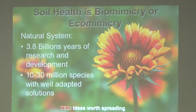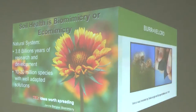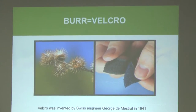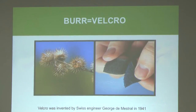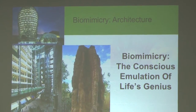If I had to explain soil health in one word, it would be biomimicry — eco-mimicry. What has Dr. Beck been saying? Emulate the prairie. We have 3.8 billion years of research and development and 10 to 30 million species to learn from. A scientist used velcro after seeing a cocklebur burr on his dog — that's biomimicry, and that design made him a millionaire.